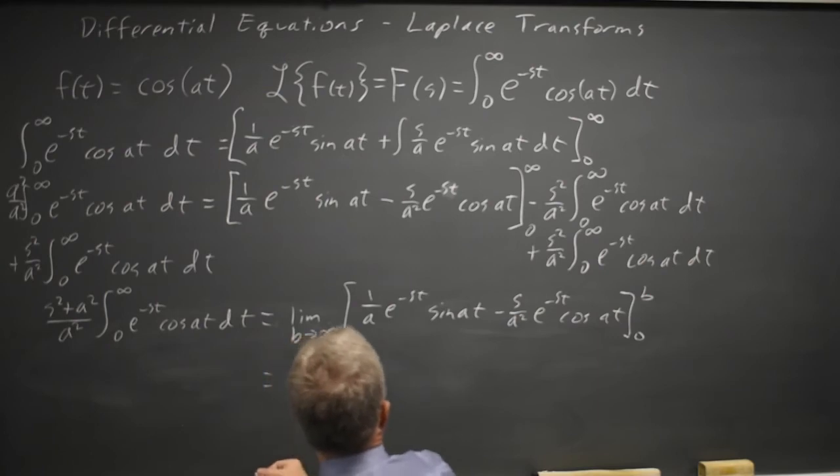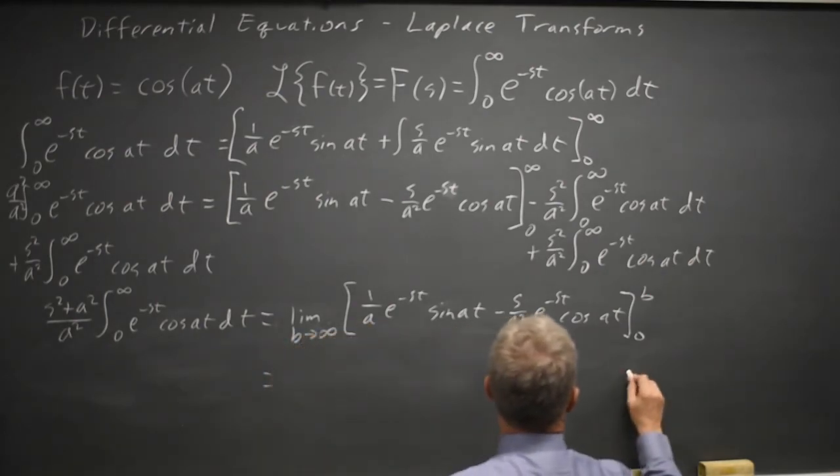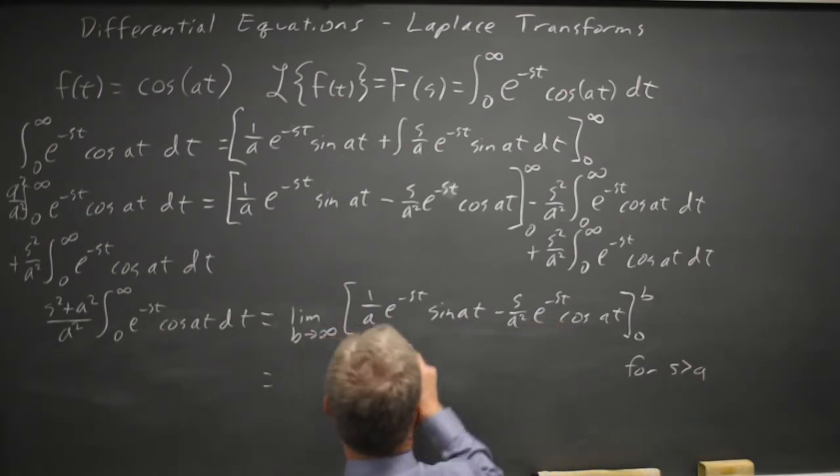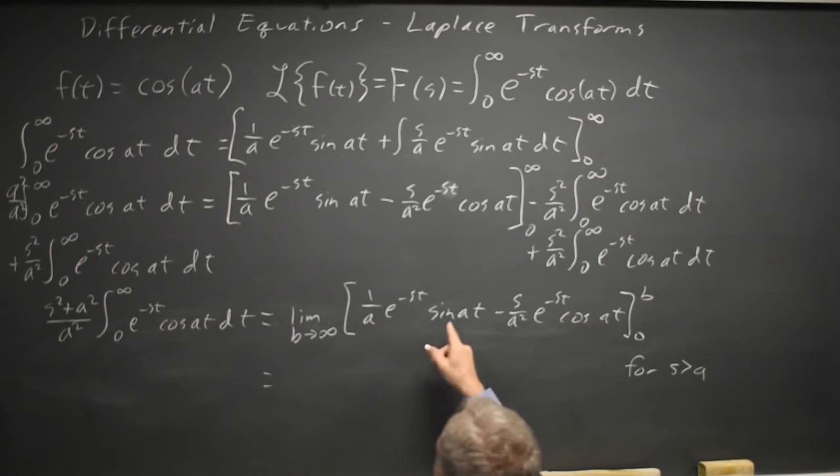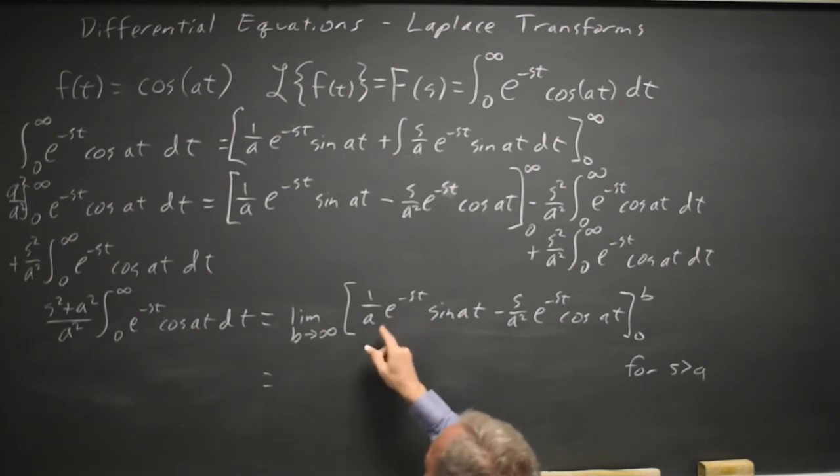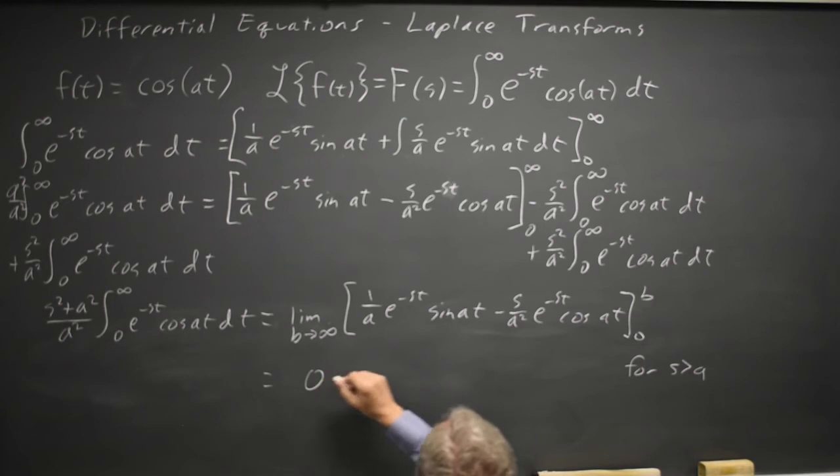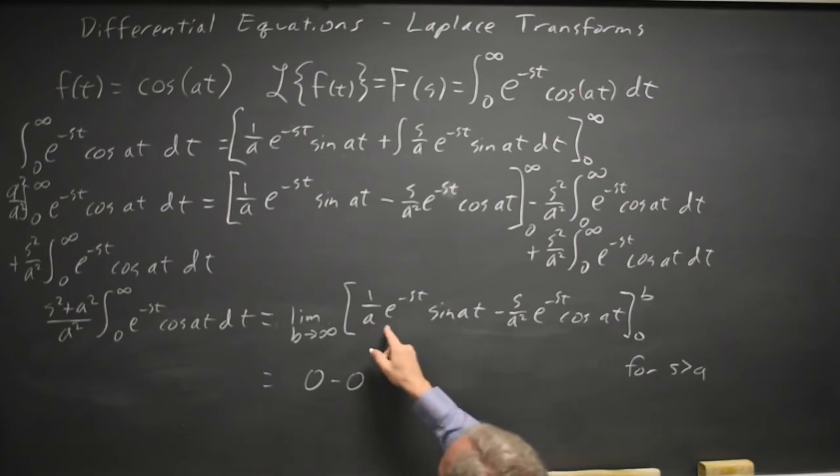And on the right, for s greater than a, as b goes to infinity of e to negative s b goes to zero, sine of zero. Sine of ab is bounded between negative one and one, so the first term here goes to zero. Similarly, this exponential also goes to zero, and we only have to worry about what happens at t equals zero.